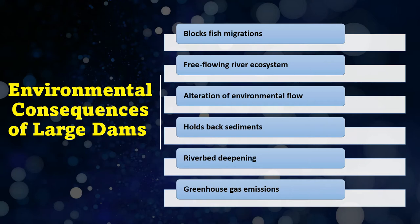Another significant impact is the transformation upstream of the dam from a free-flowing river ecosystem to an artificial still-water reservoir. Changes in temperature, chemical composition, dissolved oxygen levels, and physical properties of the river are often not suitable to the aquatic plants and animals that evolved within that river system. Reservoirs often host non-native and invasive species like snails, algae, and predatory fish that further undermine the river's natural communities.